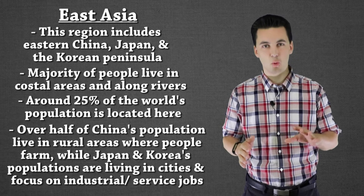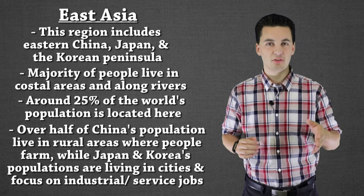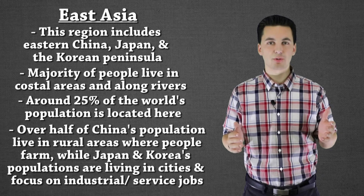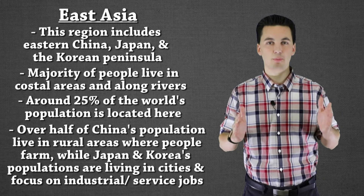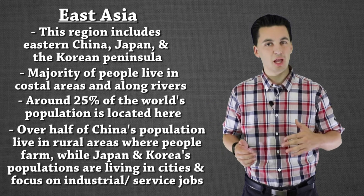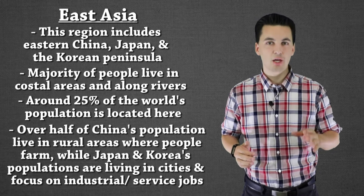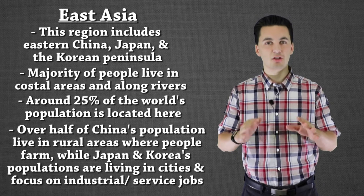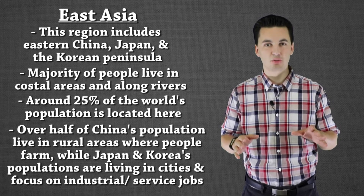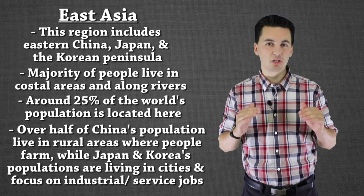We'll go over China's one-child and two-child policy later on in another video and also in class. It's important to realize that there is some government control over the population, which has kind of kept it at bay. Whereas Japan and Korea haven't needed to do that — especially Japan, which has actually started to see a decline in population growth. We'll talk about that later with population pyramids and the demographic transition.